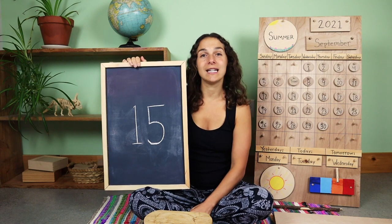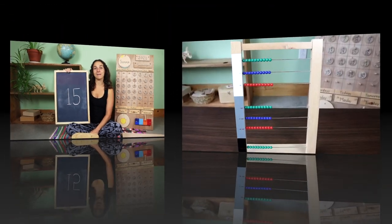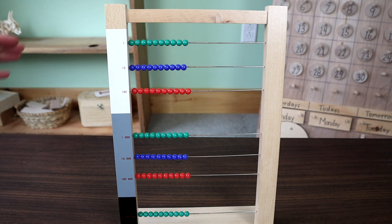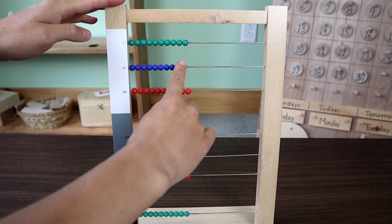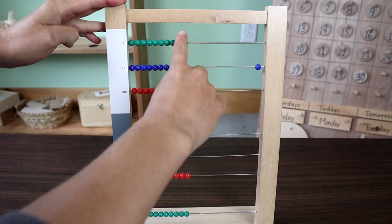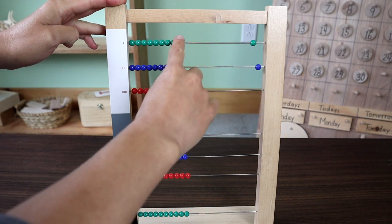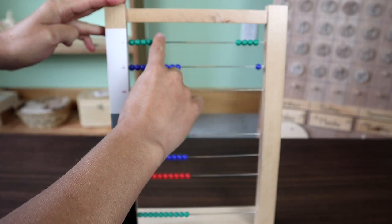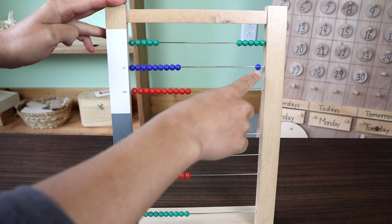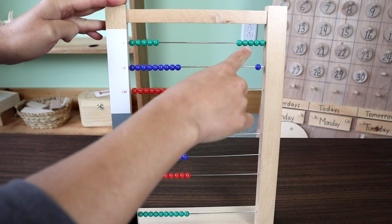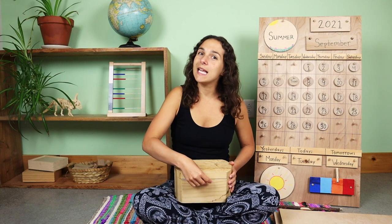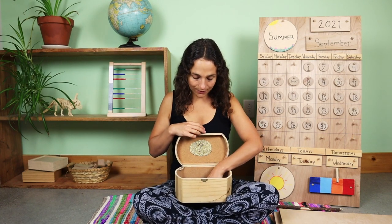Let's count to the number 15 together using the large bead frame. Today we're going to count to the number 15 using the large bead frame. Ten, eleven, twelve, thirteen, fourteen, fifteen. One ten, five units. Fifteen.